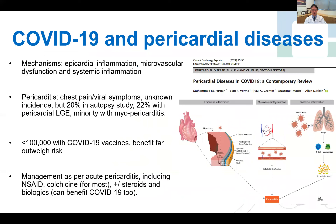We can't get away from the current era without mentioning COVID-19, which can have associated pericarditis with the presumed mechanisms of systemic and epicardial inflammation and microvascular dysfunction. In some autopsy and MRI studies, up to 20% of COVID-19 patients may have pericardial inflammation, but it's difficult to determine how many of these are actually due to COVID-19, and therefore the true prevalence is likely much lower.